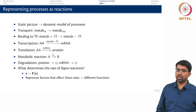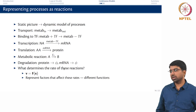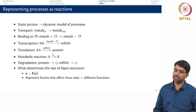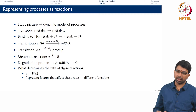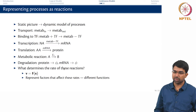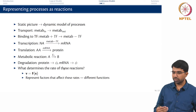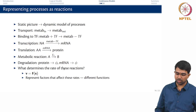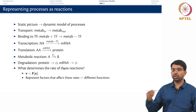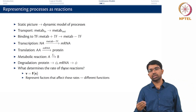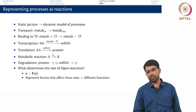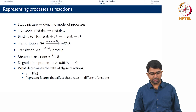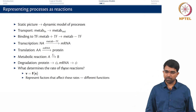You need to represent all the factors. They might be allosteric inhibitors, they may be allosteric activators, other effector molecules, ions, sensitivity to pH — whatever. All these things have to be incorporated into your dynamic model one way or the other.